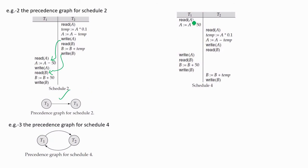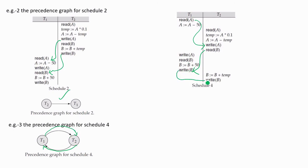For schedule four, we can see read A before write A, giving an edge from t1 to t2. There is also a read B before write B, giving an edge from t2 to t1. Additionally, the edge t1 to t2 can be obtained from write B — write B, and the edge t2 to t1 can also be obtained from write A — write A. This is the precedence graph for schedule four.